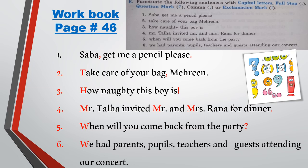The fourth sentence is: 'Mr. Talha invited Mr. and Mrs. Rana for dinner.' M will be capital at the start of the sentence. Again, M for Mr. and M for Mrs. will be capital. We put a full stop at the end of the sentence.